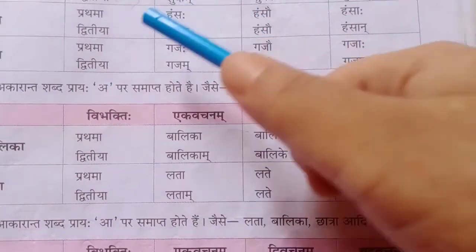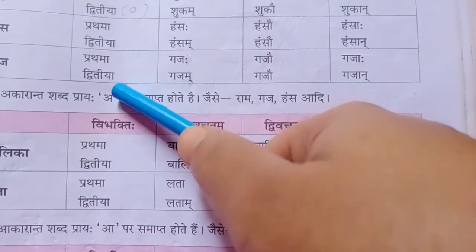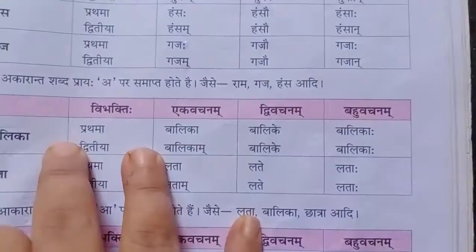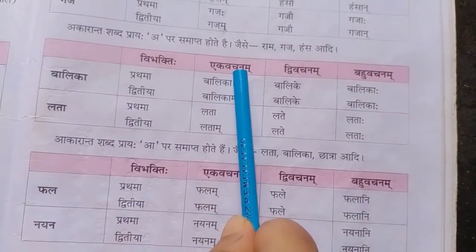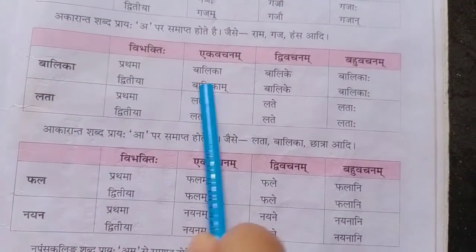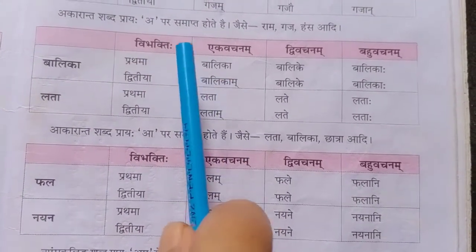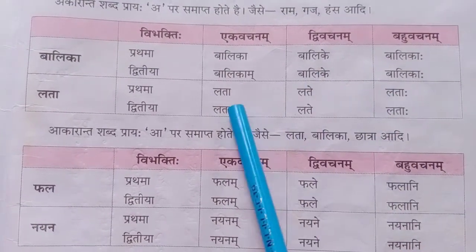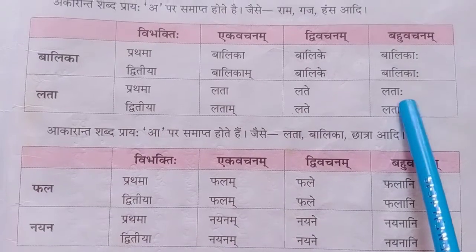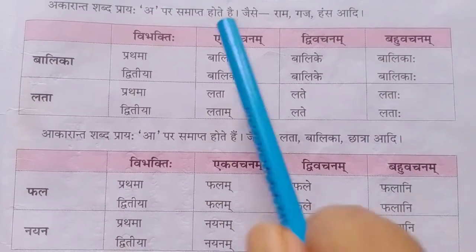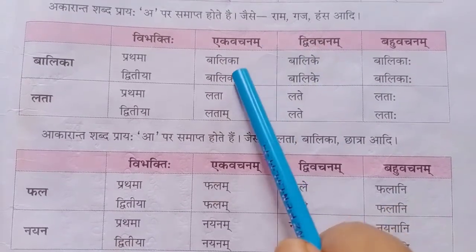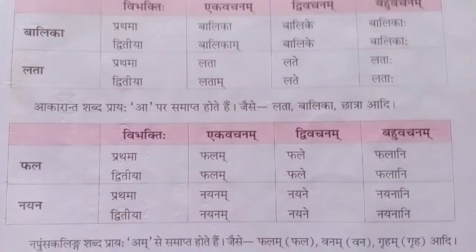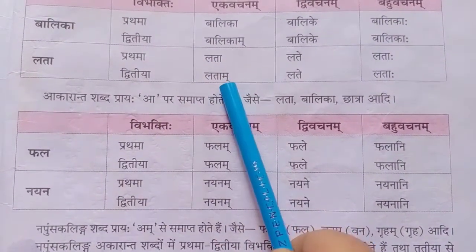Now see Lata and Balika — same pattern for feminine gender. Balika, Balike, Balikaha — and Balikam, Balike, Balikaha. Lata, Late, Latah — and Latam, Late, Latah. So Balika means one girl and Balikam means 'to the girl.' Lata means one creeper and Latam means 'to the creeper.'